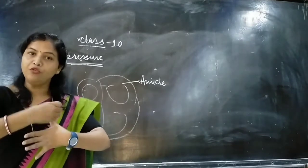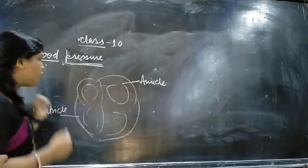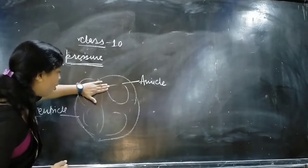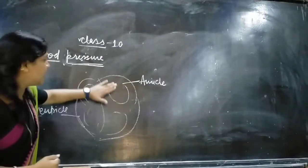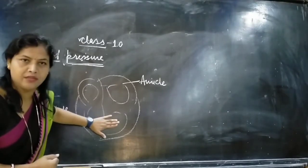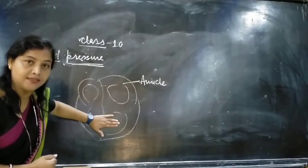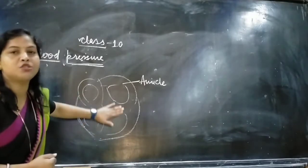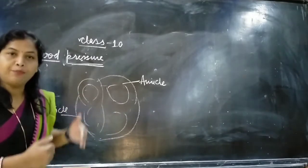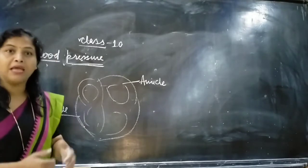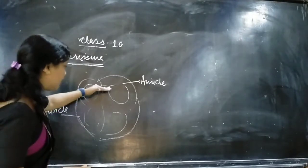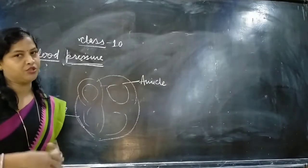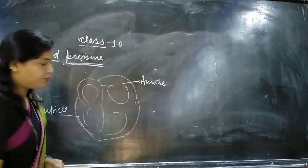When blood moves from the auricle to the ventricle, there is not much pressure exerted. So this pressure is known as diastolic pressure. The pressure which is exerted as blood moves from auricle to ventricle is called diastolic pressure.